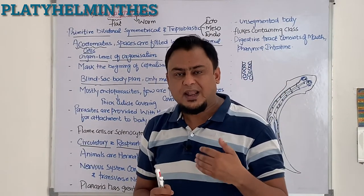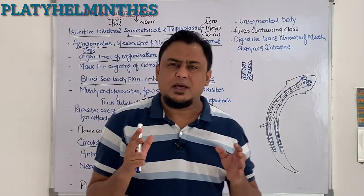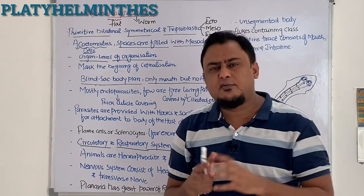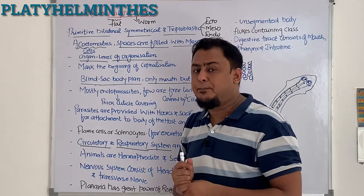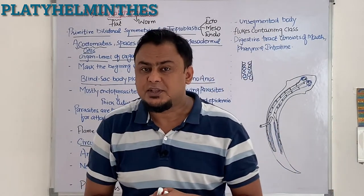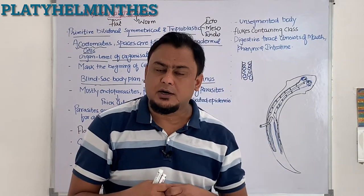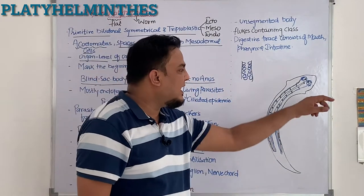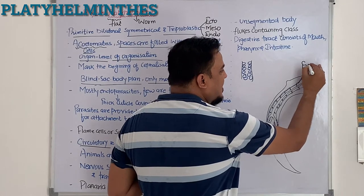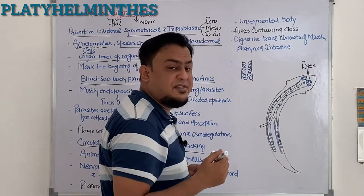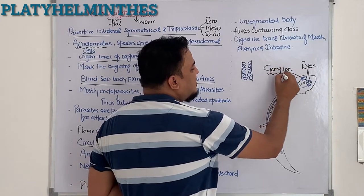One more interesting point: cephalization started from Platyhelminthes. Cephalization means the head part, which mainly consists of the brain, nerve cord, and nerves. These structures first appeared in Platyhelminthes. It marks the beginning of cephalization — the presence of a head along with components like brain and nerves. The best example to prove cephalization in Platyhelminthes is the eyes present in Planaria, as well as the ganglion.